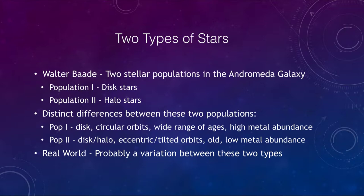So what does this mean with two types of stars? They were divided into two stellar populations by Walter Baade when he looked at the Andromeda galaxy. He called the stars in the disk population one stars, and population two stars were the halo stars, and we found that there is a distinct difference between these two populations.